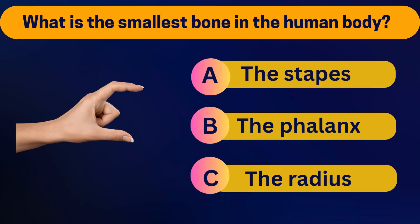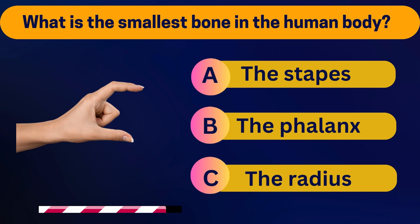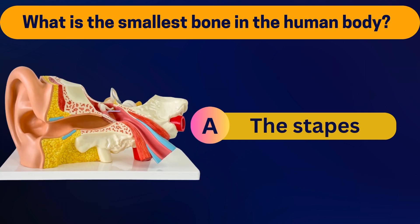What is the smallest bone in the human body? The stapes, the phalanx, or the radius? The stapes — it's located in the ear.